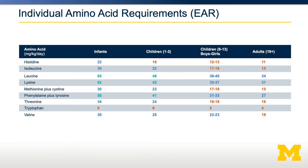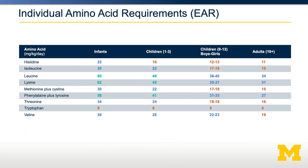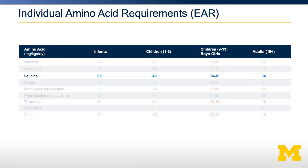Shown here is the estimated average requirement for each individual amino acid across the lifespan. As you can see, nine essential amino acids are shown here, because there are nine essential amino acids in adults. I've colored this chart based on the approximate requirements of each amino acid. In adults, we require small amounts of tryptophan — only 4 milligrams per kilogram per day — whereas we require relatively large amounts of leucine: 34 milligrams per kilogram per day. That's because leucine is much more abundant in most of our body's proteins than tryptophan. Looking across the rows, infants require 65 mg/kg/day of leucine, whereas adults require about half as much — only 35 mg/kg/day — because infants are growing rapidly, are very anabolic, and are making a lot of new protein.